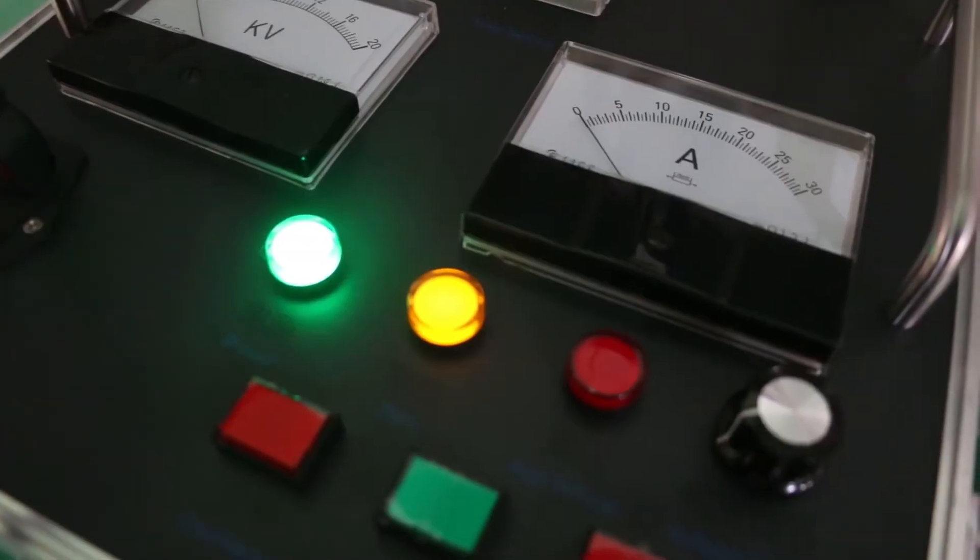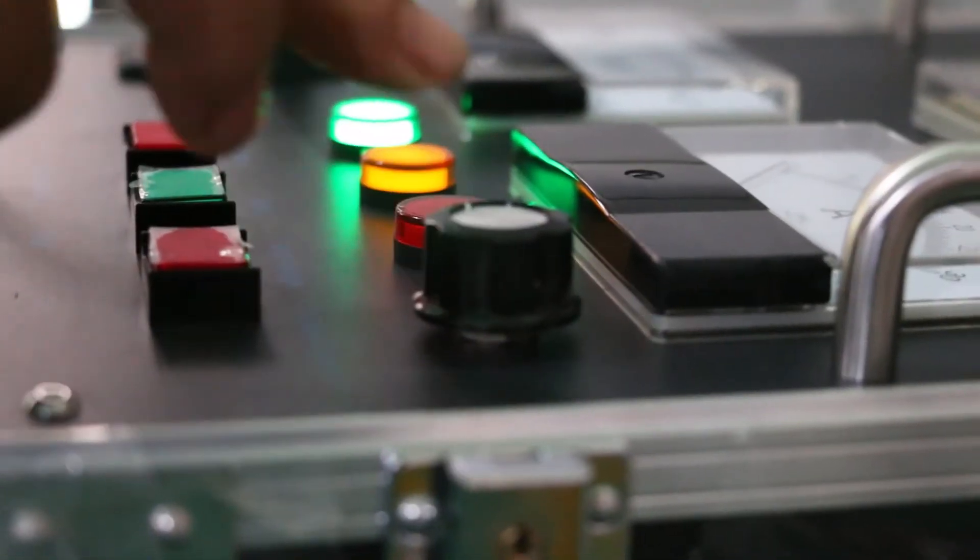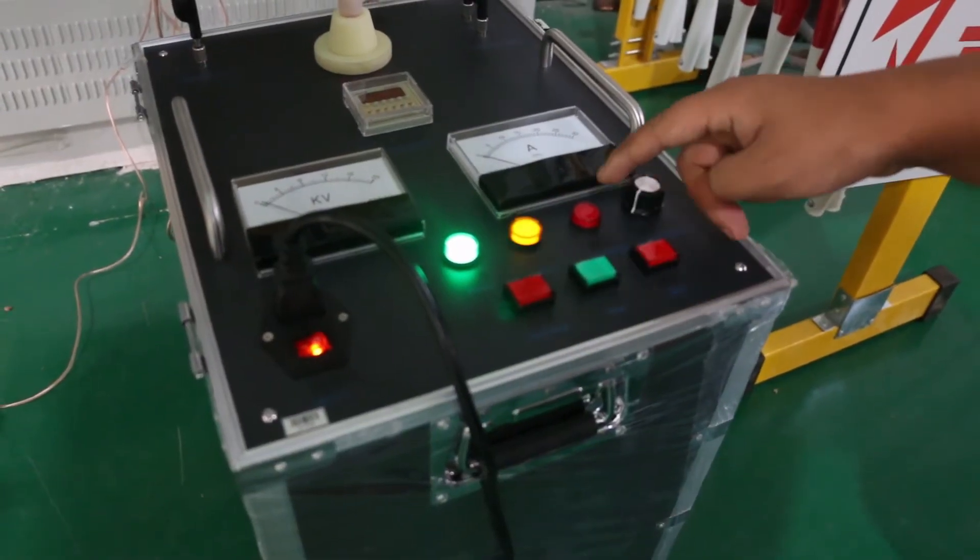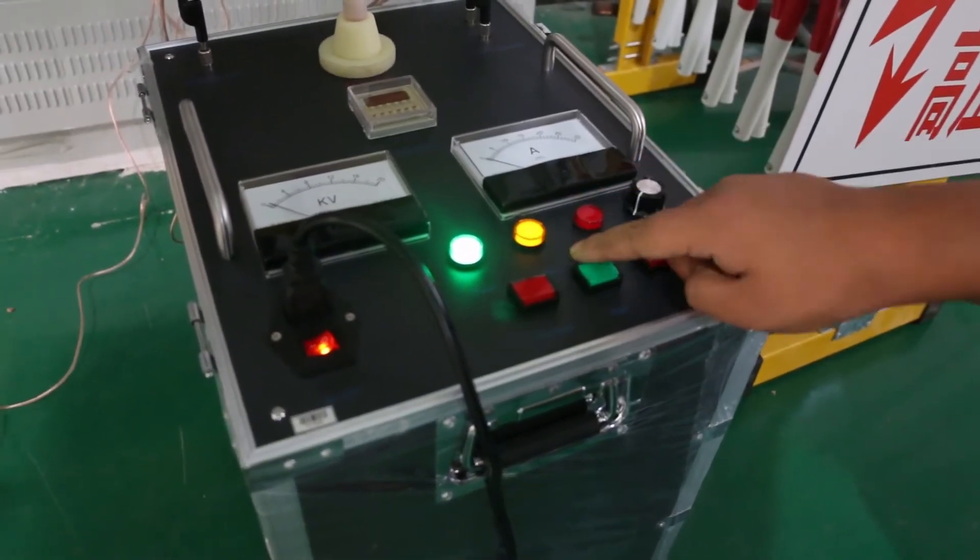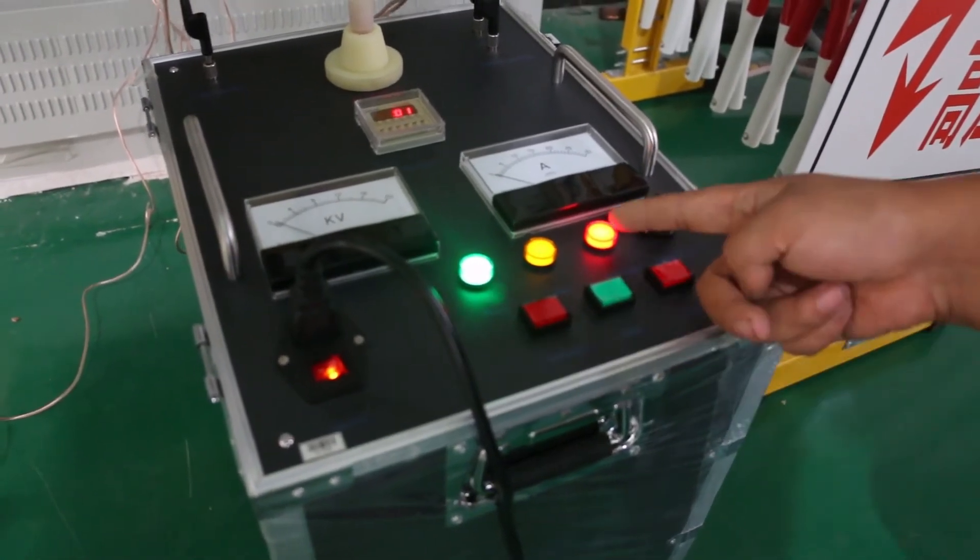Second, power indicator will light up after turning on the generator. Turn the voltage regulator anti-clockwise to the end until it can't be turned. The zero indicator will light up. Press start button and the high-voltage indicator will light up.